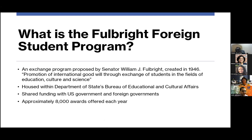What is the Fulbright Foreign Student Program? It was developed with Senator William Fulbright around 1946 to promote international goodwill and exchange of students in the educational, cultural, and science process. It's housed within the Department of State and the Bureau of Educational and Cultural Affairs, with shared funding between US and foreign governments. Approximately 8,000 awards are offered each year, with students going to multiple institutions across the United States.